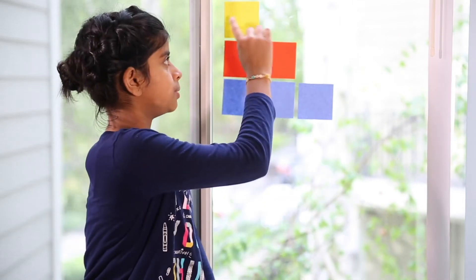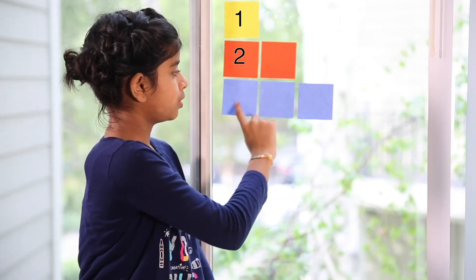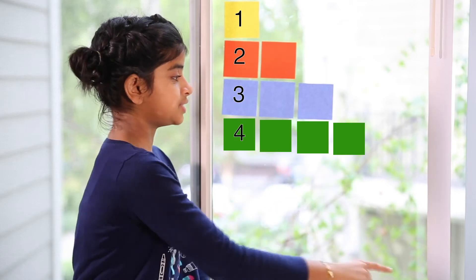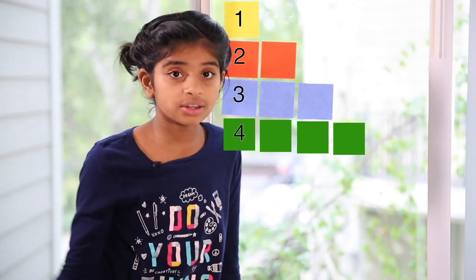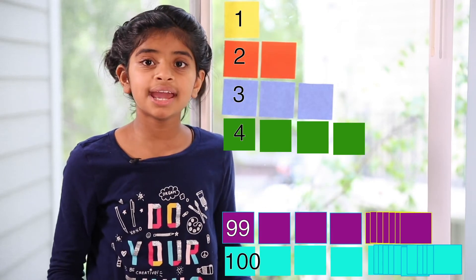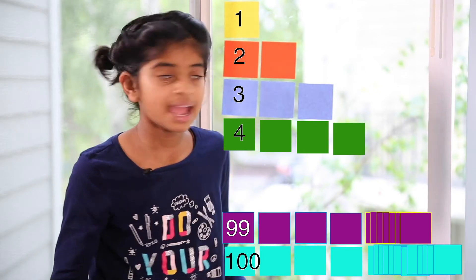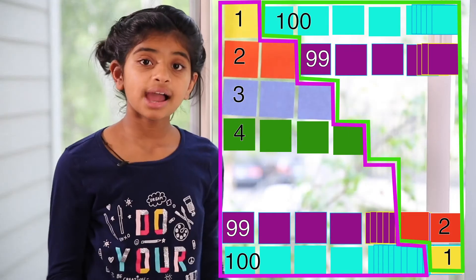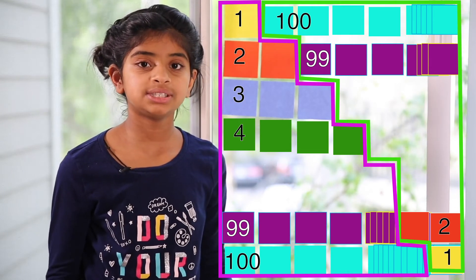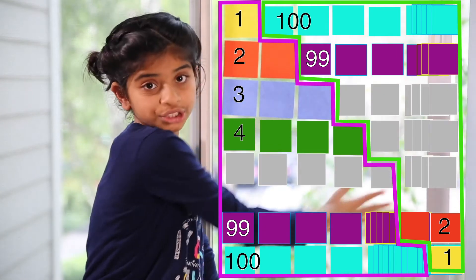So if we were doing this, 1 all the way to 100, there'd be 1 sticky note, 2, 3, 4, 5, 6, 7, 8, all the way to 100, right? Then we would double that shape and place it on top.